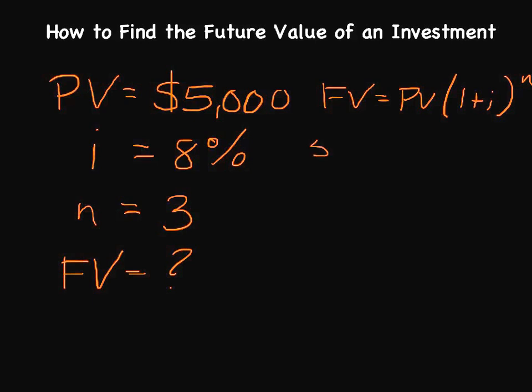We know our present value, of course, is $5,000. And we have 1 plus our interest rate of .08. The reason it's .08 and not 8% is we need to convert that into decimal form, which I've already done. And then n, we know that we have three years we are going to be investing this particular money at. And so 1.08 to the third power is 1.259712.